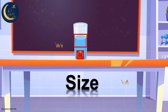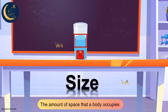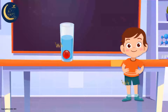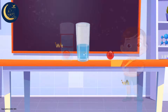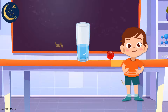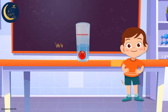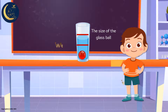Size, my friends, is a property of matter, and it is the amount of space that a body occupies. The size of the glass ball is the same as the amount of water that rose. In the beginning, the water level was here, and when we place the glass ball inside the cup, it rose to here. So this extra amount of water at the top represents the size of the glass ball.